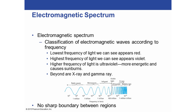The electromagnetic spectrum is a way of classifying electromagnetic waves according to their frequency, from very low frequency all the way to very high frequency. The lowest frequency of light that we can see appears red. Moving up the visible light spectrum, the highest frequency we can see appears violet. Above violet is ultraviolet light — energy from the sun that is more energetic than visible light and can cause sunburns if you stay out in the sun too long.